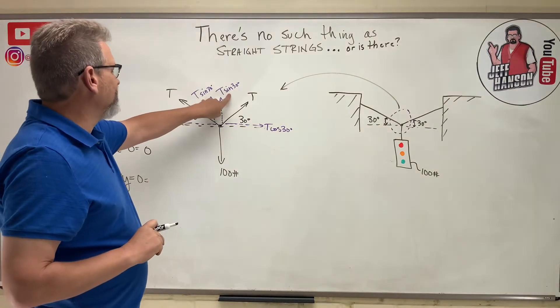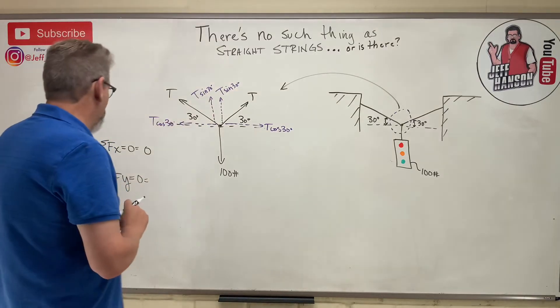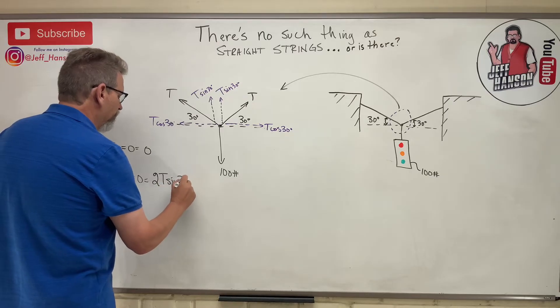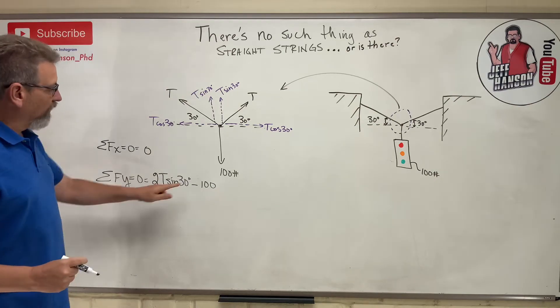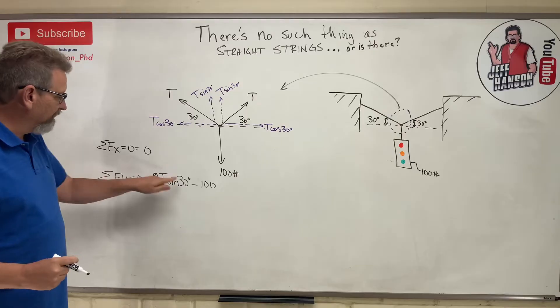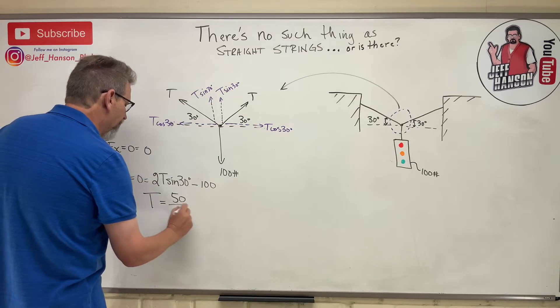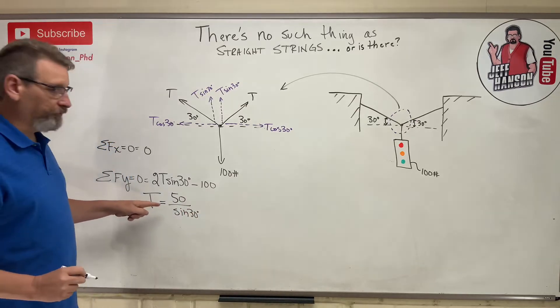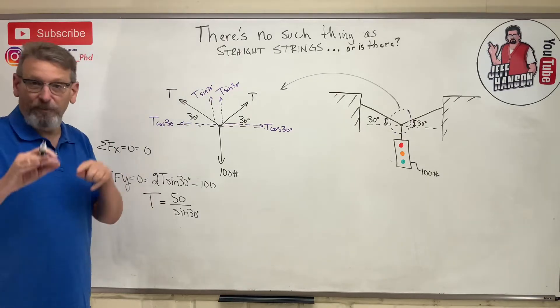Let's try the y equation. I've got two of these guys pulling uphill and one pulling downhill. Let's take those two guys and combine them together: 2T sine of 30 minus 100 equals 0. Now we can move the 100 to the other side, divide it by 2, that becomes 50, and then divide it by the sine of 30. So that becomes T equals 50 divided by the sine of 30.